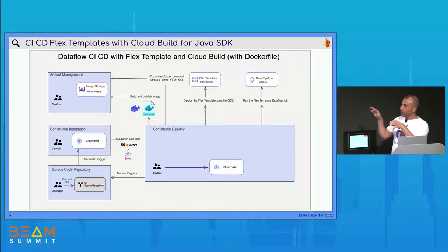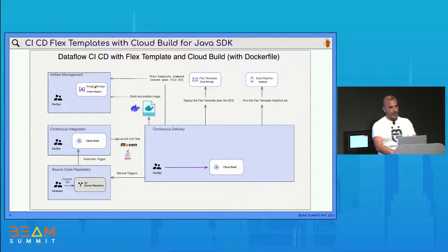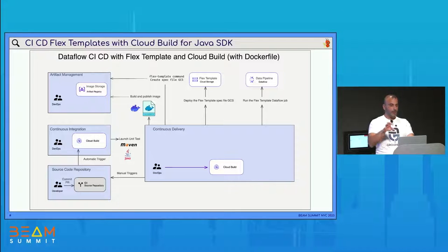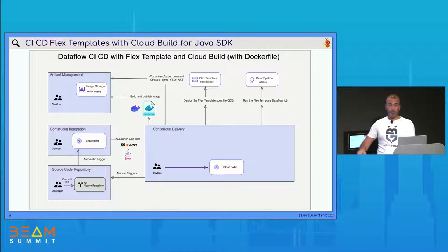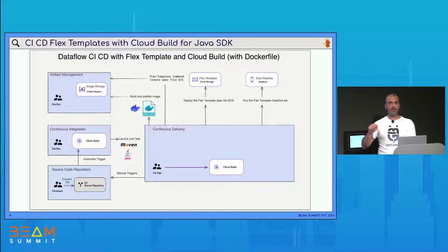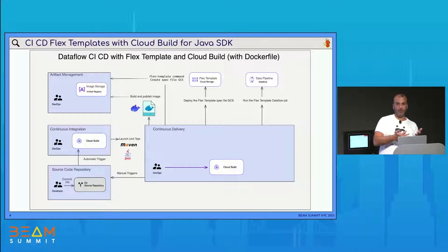In this schema is the first use case I will present in the demo. On the left side we have the artifact management in Google Cloud — an Artifact Registry. In this example, I wanted to show two approaches with Flex Template. The first approach uses a Dockerfile with all dependencies installed inside the container. The second approach is without a Dockerfile — we can generate the Docker image with the Flex Template command. To be honest, when I read the documentation, it wasn't very clear to me when to use a Dockerfile or not, so I wanted to show both approaches to the community today.